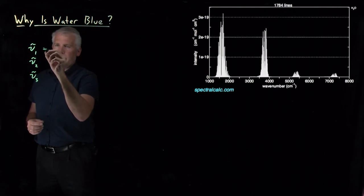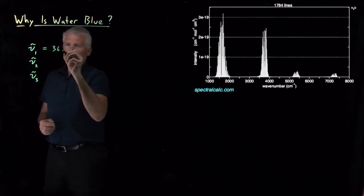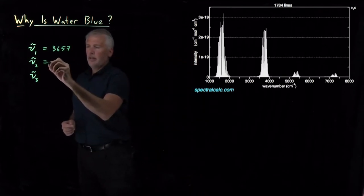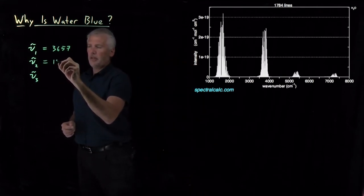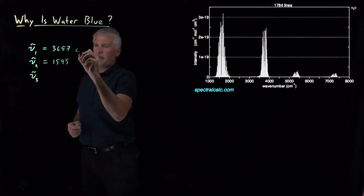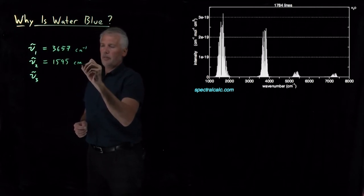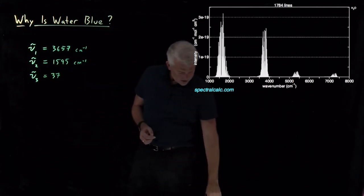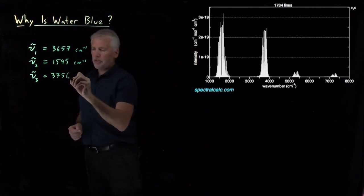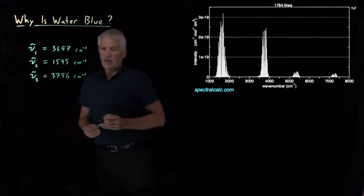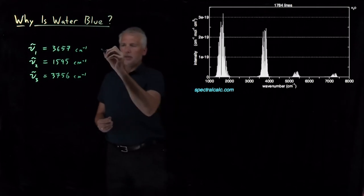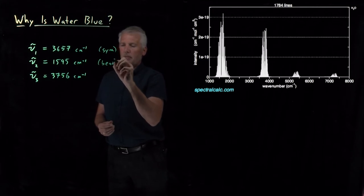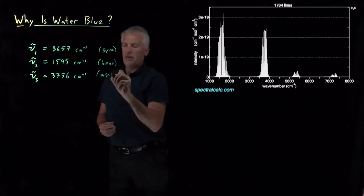At bands which are roughly 3650 wave numbers, 3657 for the symmetric stretch, 1595 inverse centimeters for the bending mode, and 3756 inverse centimeters for the asymmetric stretch. So, just as a reminder, symmetric stretch, bending mode, asymmetric stretch.